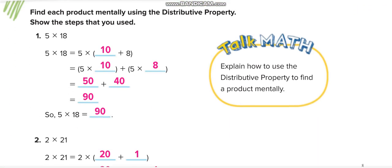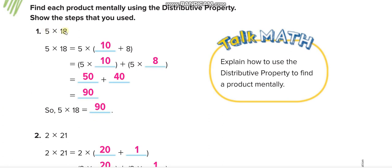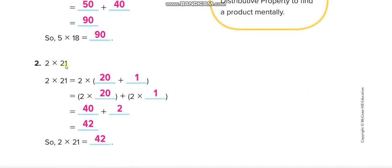In guided practice, 5 times 18, we break 18 into 10 and 8. First we multiply 5 with 10, then 5 with 8. 5 times 10 is 50, 5 times 8 is 40. 50 plus 40 equals 90. Again here, 2 times 21, so we break 21 into 20 plus 1. 2 times 20 is 40, and 2 times 1 is 2. 40 plus 2 equals 42. If you directly start multiplying 2 by 21, maybe you get confused or think a lot.